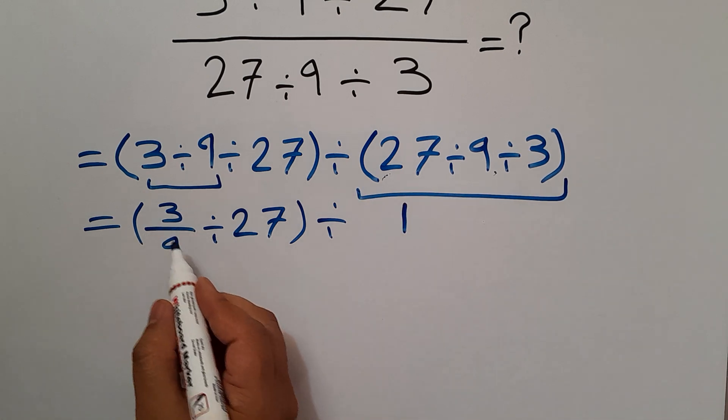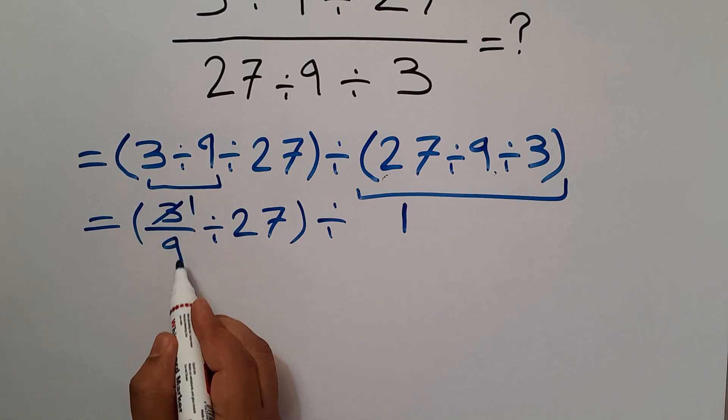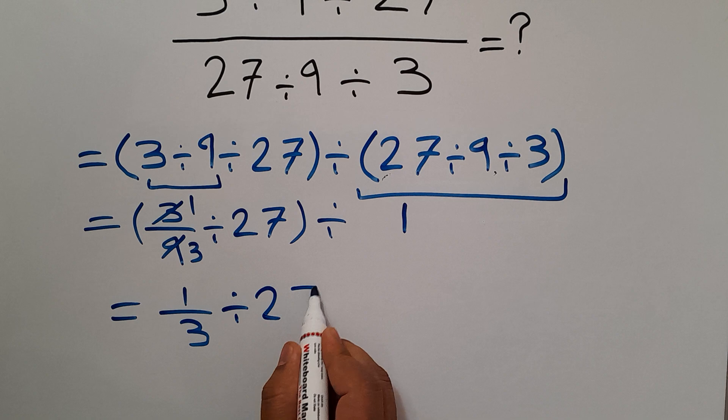And now here we can simplify this fraction. 3 divided by 3 equals 1, 9 divided by 3 gives us 3. So we have 1 over 3 divided by 27.